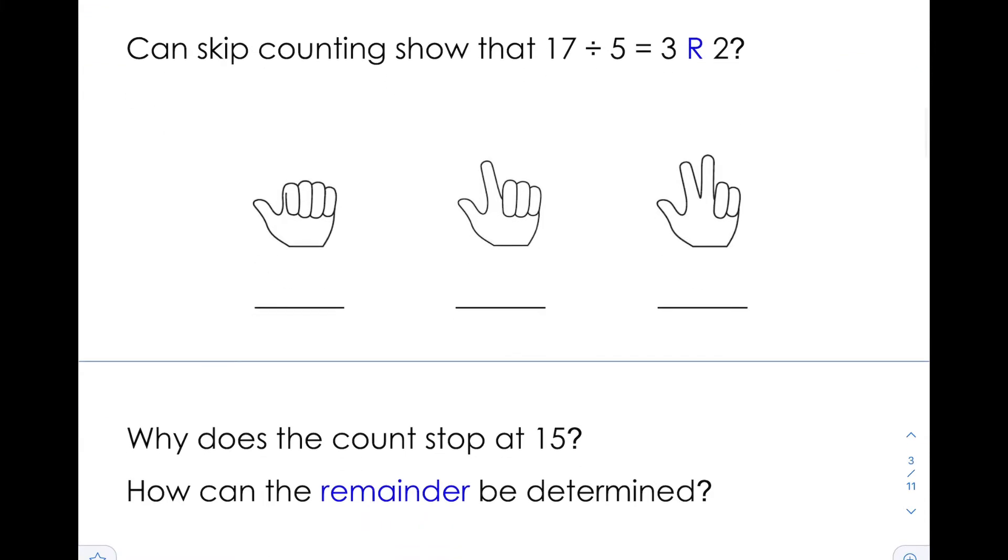Can skip counting show that 17 divided by 5 is equal to 3? In this case, we're going to skip count by 5. Our goal is to get up to 17. So, we've got 5, 10, 15, and to get to 17, we have to add 2 more. We counted once, twice, 3 times, and then we added 2 more to get up to 17, and that is our remainder. So 3 remainder 2 is our answer.